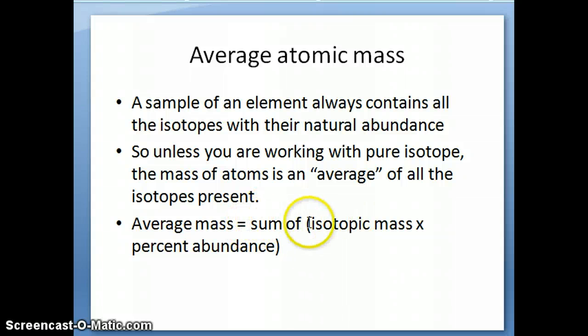You would use the sum of each isotopic mass. In the case of neon, it will be 20, 21, and 22. And each of those masses would then be multiplied by their percent abundance. And then you're going to add all of these numbers together to give you the average mass.